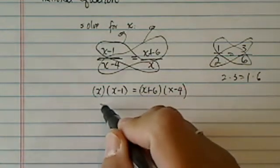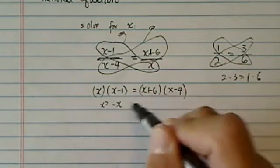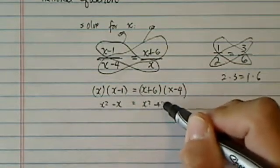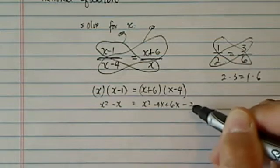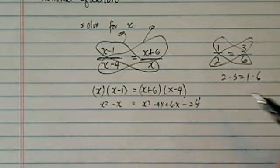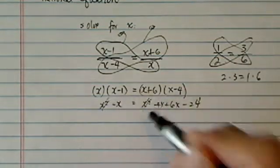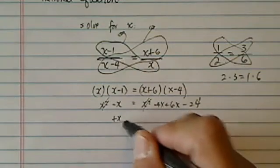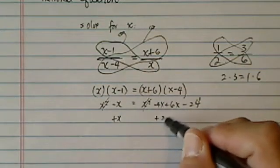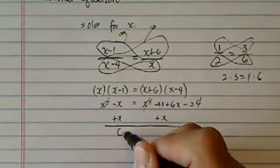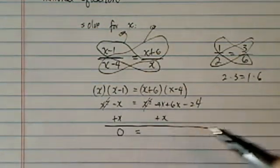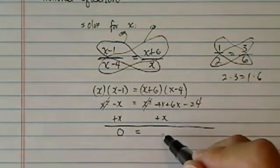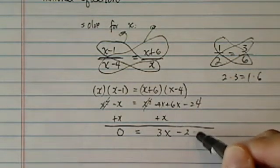All right, from here let's clean it up. We have x squared minus 4x plus 6x minus 24 over here. x squared cancels out very nicely. Let's add x on this side, so we have 0 on this side. Minus 4 plus 6 is 2, and I have 3x minus 24.